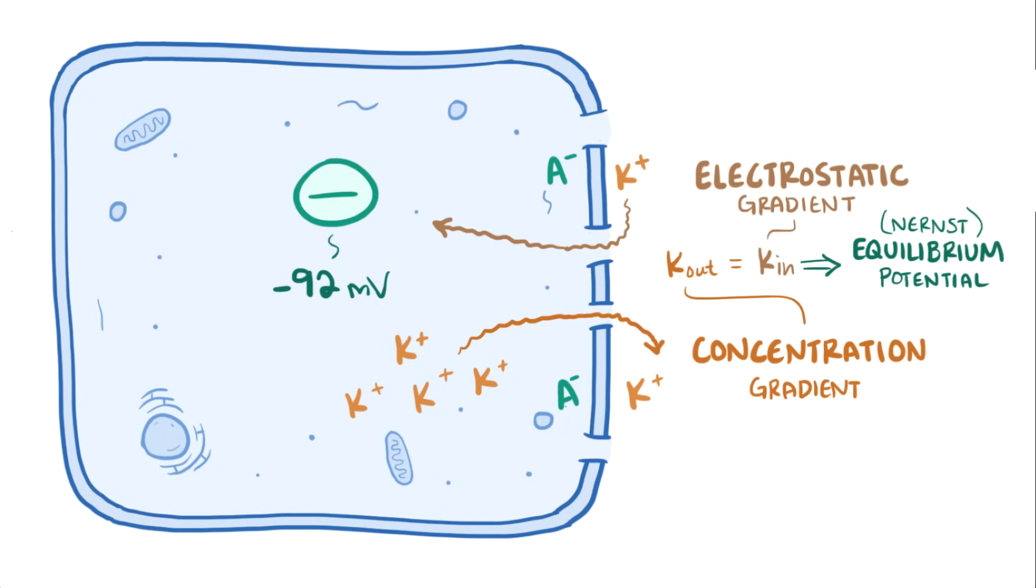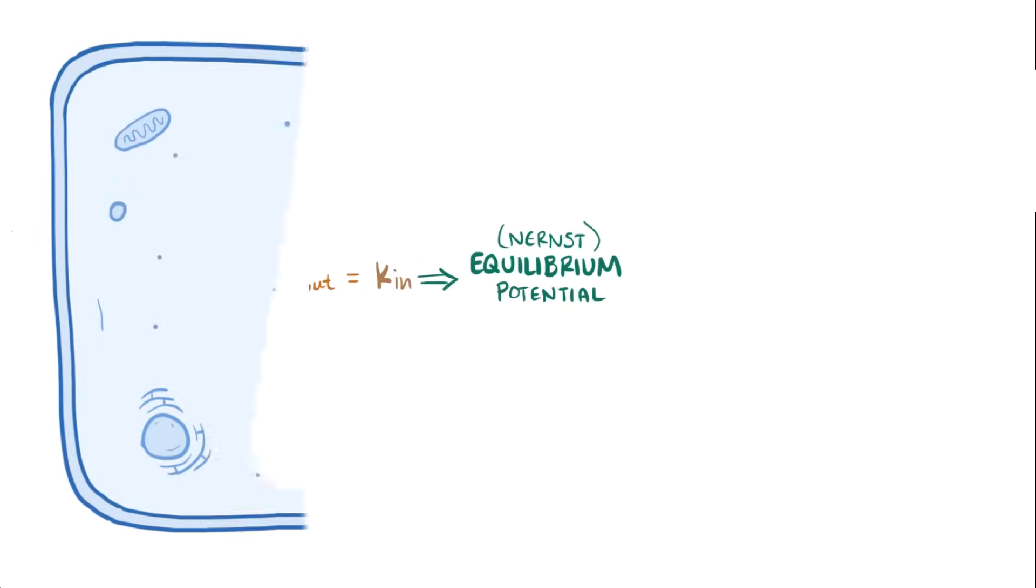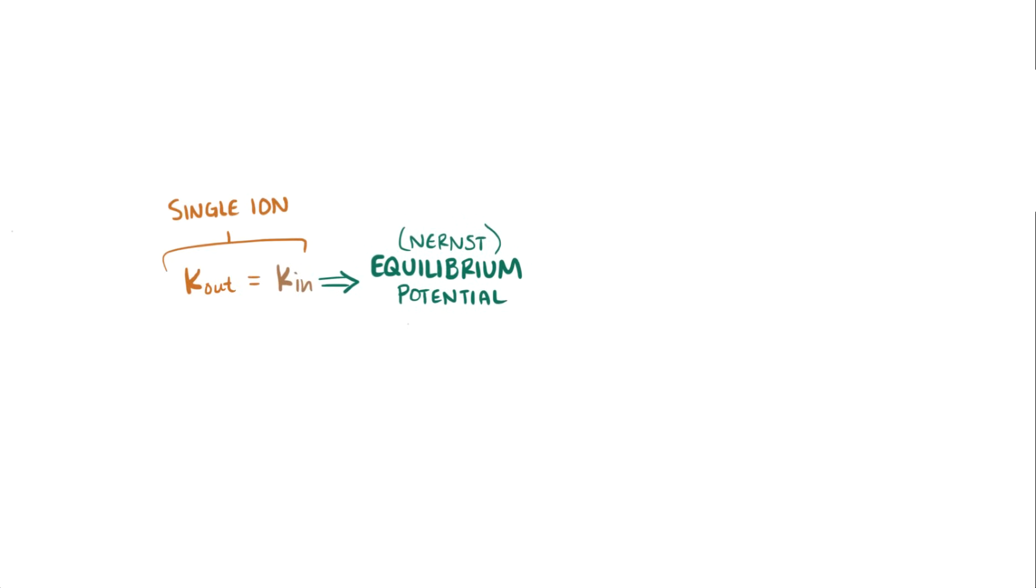So the equilibrium potential of an ion is dependent on two things: the concentration gradient for that ion and the cell being permeable to that ion. If we're only dealing with one single ion, then the equilibrium potential for the ion equals the resting membrane potential for the entire cell.